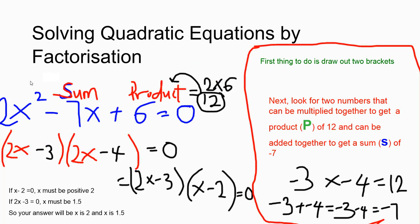The next one we're going to do is 2x squared minus 7x plus 6 equals 0. First, draw out the two brackets and put 2x in each of the brackets. Remember, what makes it quadratic is the index power 2. Now, the two numbers I need must multiply to get 12. Why? Because 2 times 6 gives 12. If the coefficient were 1, the product would just be 6. But in this case, the coefficient is 2, so you do 2 times 6, which is 12. The product we're looking for is 12, not 6.